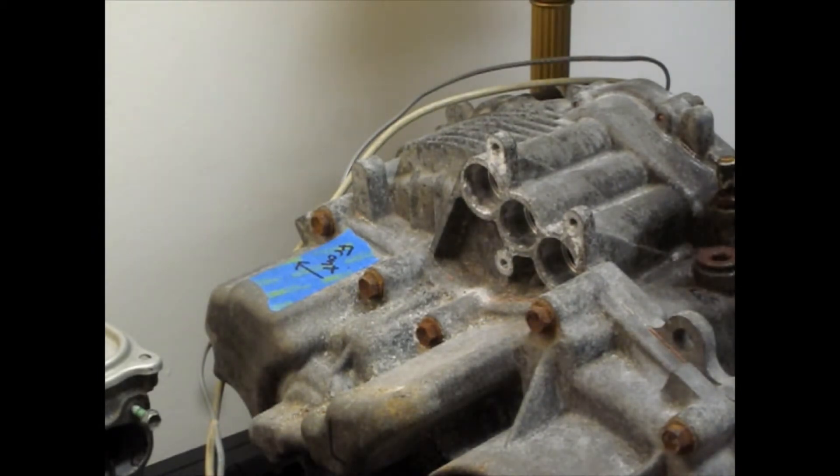All right, we'll call it 2.4 inches. So, 2 inches is 50 mil in round figures. So, this is another half past that. So, roughly 12, 10, so 60 mil deep, roughly, approximately 2.4 inches.